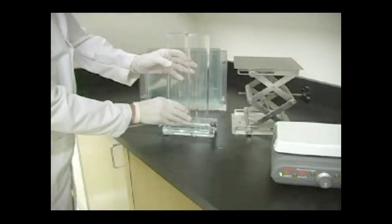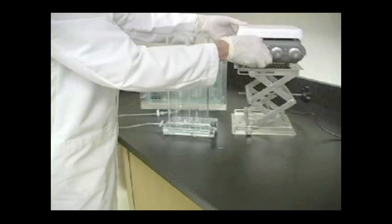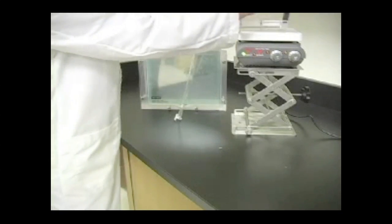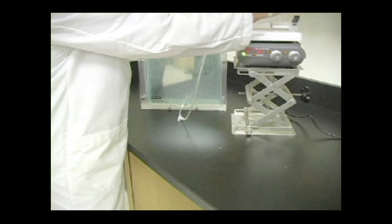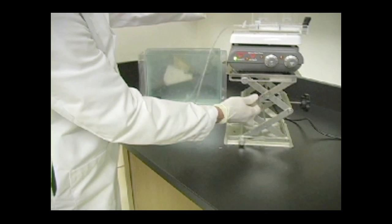Place a magnetic stir plate on a raised surface. Place the gradient former on top of the stir plate. Raise the level of the gradient former so that the bottom is above the top of the glass cassettes in the casting chamber.